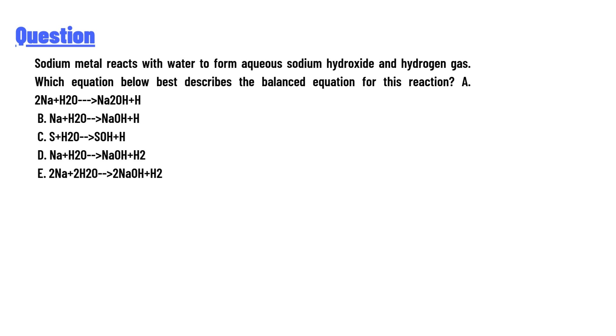Which equation below best describes the balanced equation for this reaction? A. 2Na+H2O→Na2OH+H, B. Na+H2O→NaOH+H, C. S+H2O→SOH+H, D. Na+H2O→NaOH+H2, E. 2Na+2H2O→2NaOH+H2.